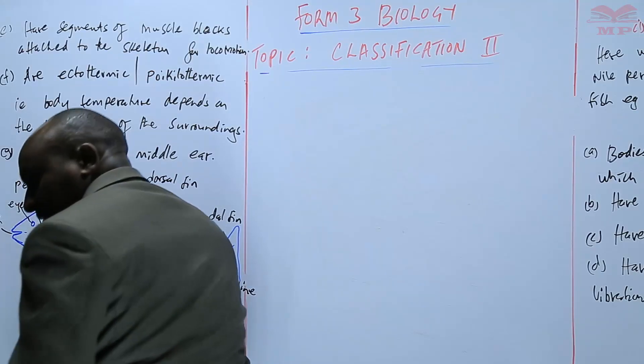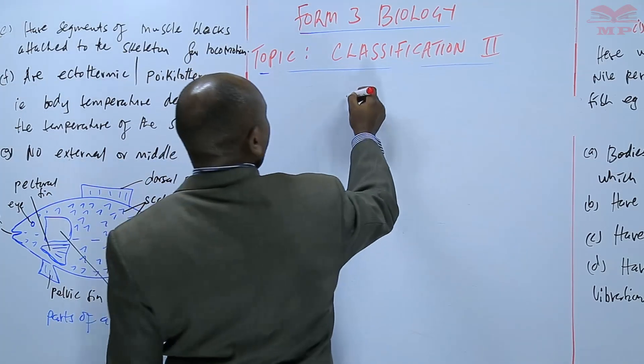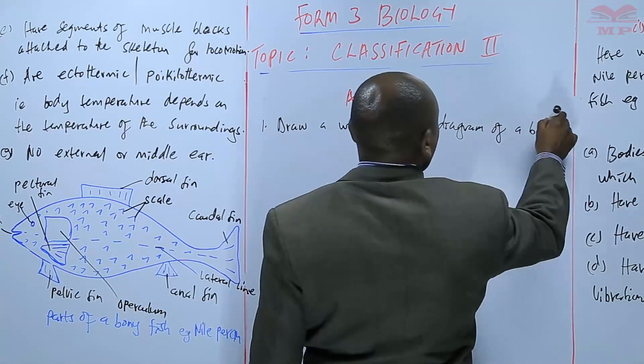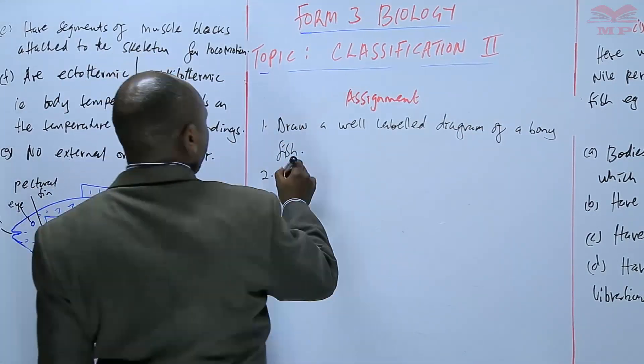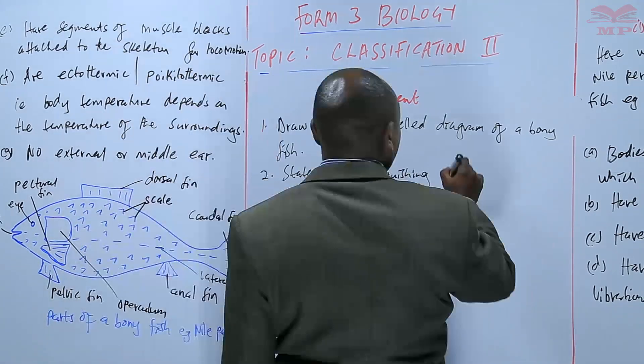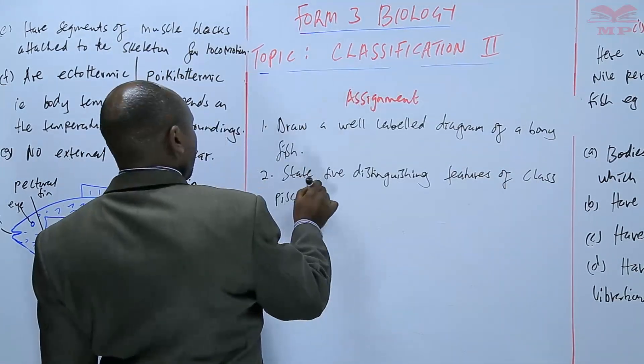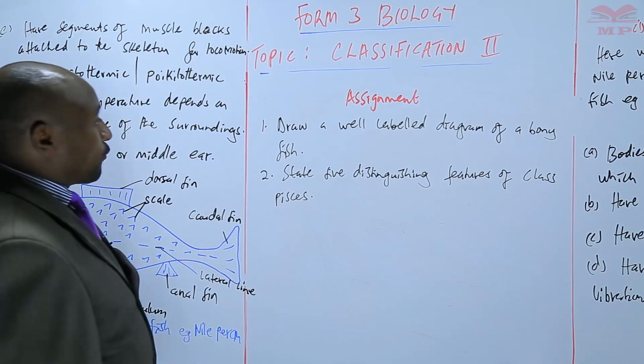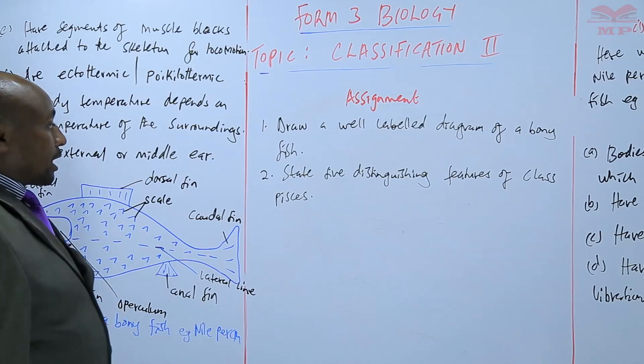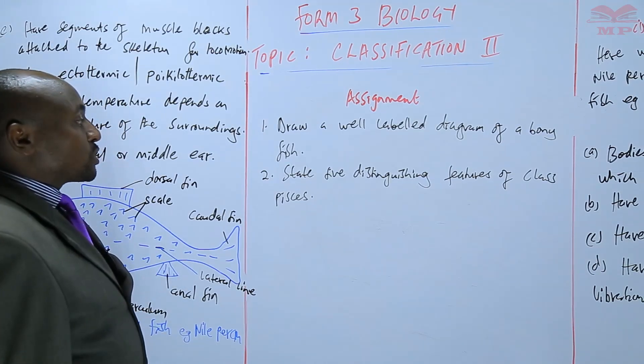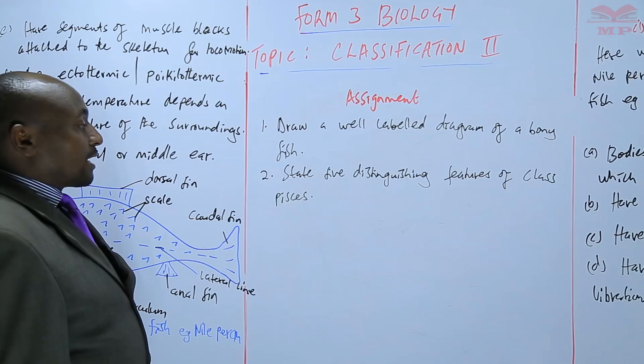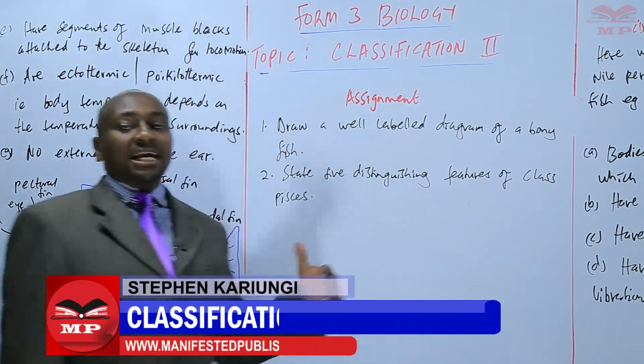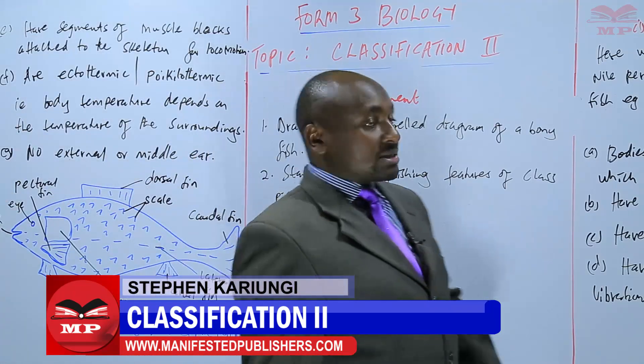We'll have an assignment on that. The assignment: draw a well-labeled diagram of a bony fish. Number two, state five distinguishing features of class Pisces, five distinguishing features that are not in another class.